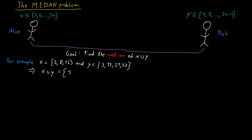In this example, the union of the two sets would be {2, 3, 8, 12, 15, 21, 37}. The median element is the element that has the property that as many elements are smaller as there are that are larger. So this would be 12, because there are 3 smaller items and 3 larger ones in the set.